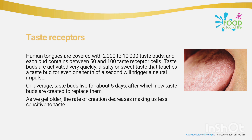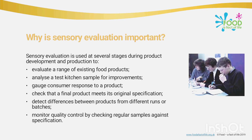The human tongue is covered with 2,000 to 10,000 taste buds, and each bud contains between 50 and 100 taste receptor cells. Taste buds are activated very quickly — a salty or sweet taste that touches a taste bud for even one tenth of a second will trigger a neural impulse. On average, taste buds live for about five days, after which new taste buds are created to replace them. As we get older, the rate of creation decreases, making us less sensitive to taste.